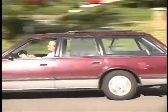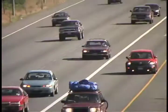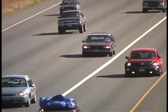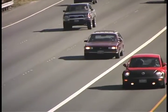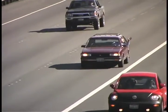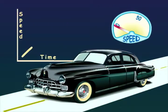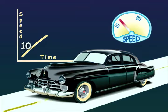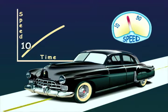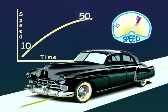By the time you reach the freeway, the car has accelerated to 50 miles an hour or more. If you went from 10 miles an hour to 50 miles an hour in one minute, then your acceleration — the change in velocity — would be 40 miles per hour per minute.